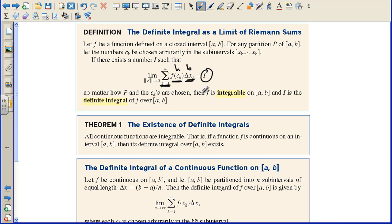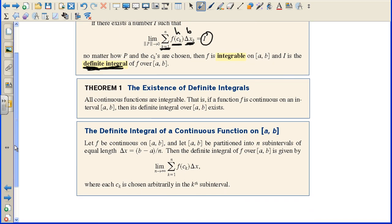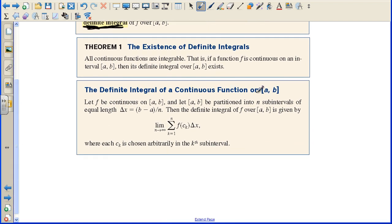No matter how P and C sub K are chosen, then F is integrable on A to B and I is the definite integral of F over A to B. So to find the area under the curve, we do what's called definite integral. Theorem 1 says the existence of definite integrals. All continuous functions are integrable. That is, if a function F is continuous on an interval A to B, then its definite integral over A to B exists.